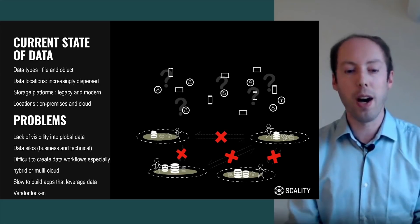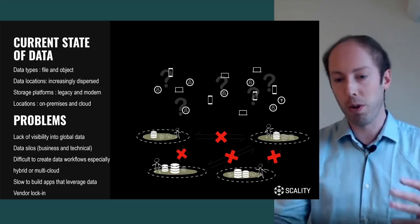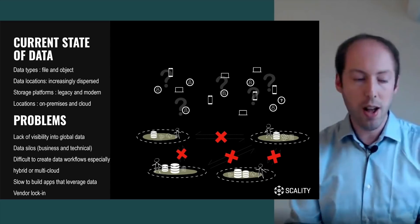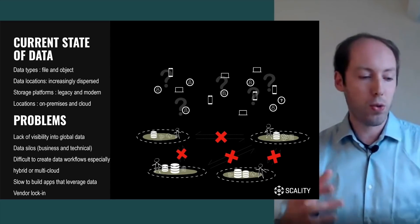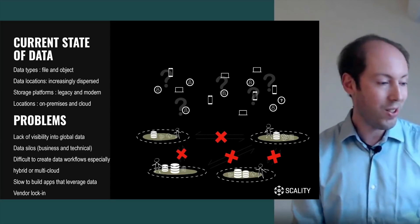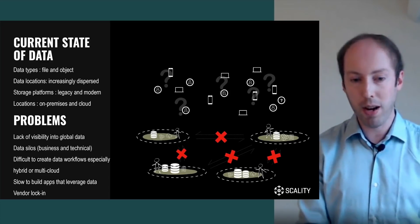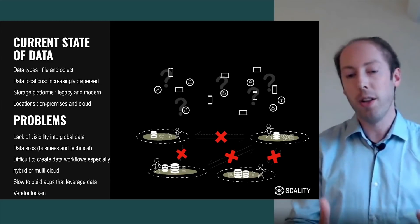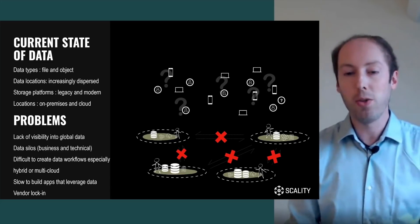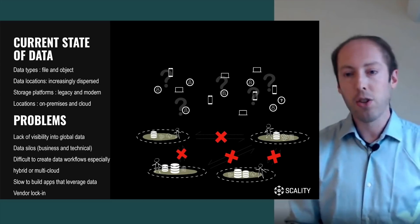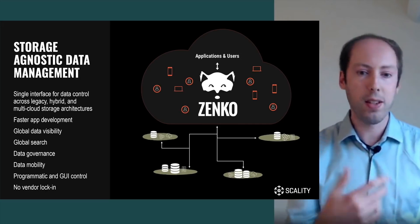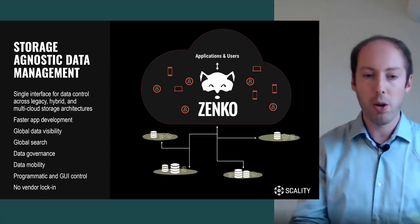It's rather difficult, hence, to build applications that leverage data from multiple silos, because your application would need to talk to various systems using different protocols. There is no unified access control, no unified authorization model. And finally, there is vendor lock-in. Data is one of the most important assets many companies have nowadays. If you're locked into a particular vendor, you don't really have the freedom to move your data elsewhere. What Zenko brings is storage-agnostic data management — a single interface for data control across legacy, hybrid, and multi-cloud storage architectures, which can be on-prem or in the cloud.